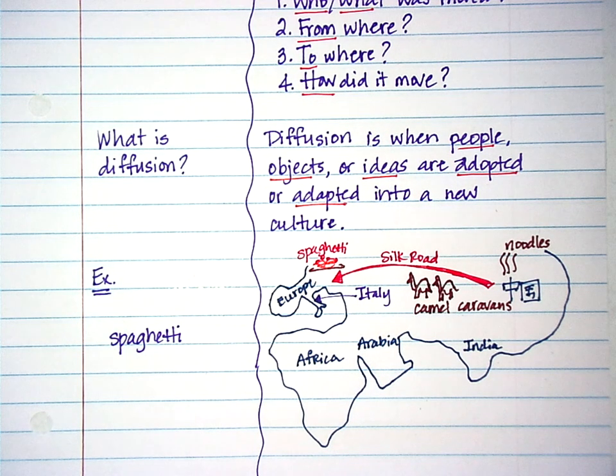So you can see from this example here that movement is not just the how, but it's the who or what was moved from where and to where. And in this picture here, I also labeled everything and drew it. And this is really what I expect you guys to be able to do when you identify movement.